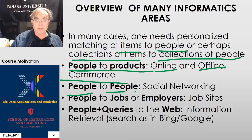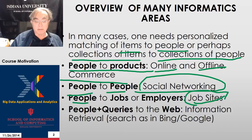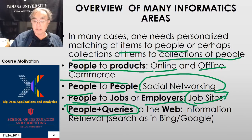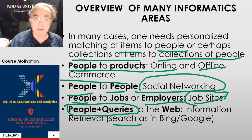People to people — that's social networking. People to jobs — that's things like Monster or other job sites, matching people to employers. And then we want to have people plus their queries matched to the internet. That's called search. So all of these are effectively recommendations.